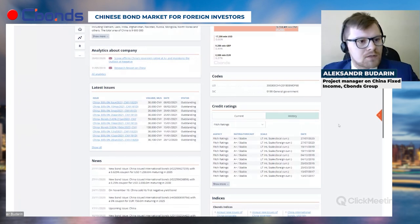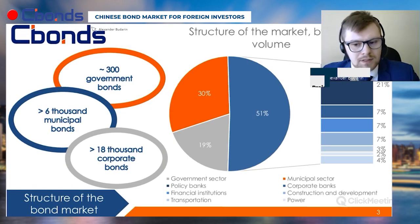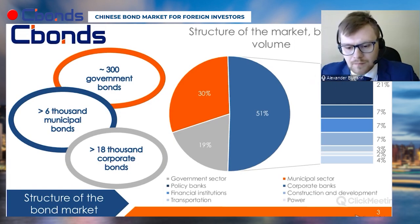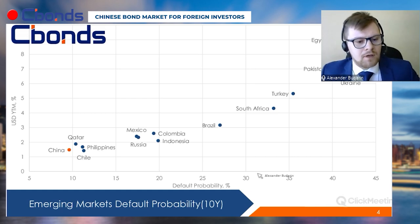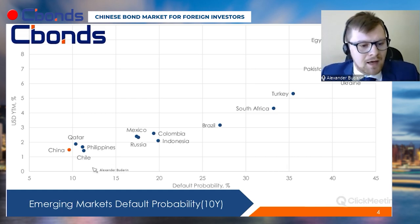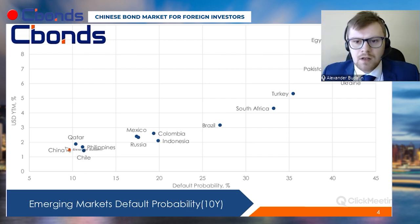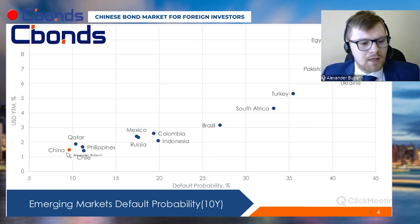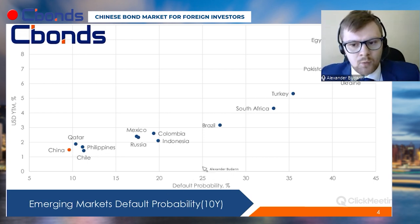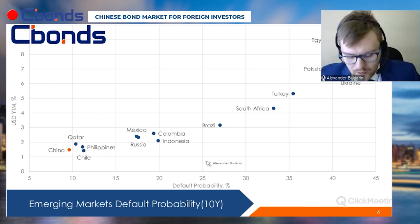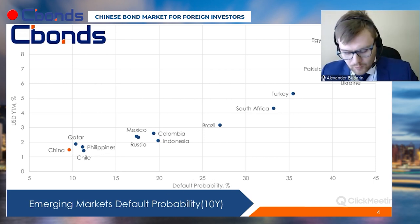As for the default probability, among selected emerging markets, China has the lowest default probability. It is less than 10 percent over a 10-year time horizon, which is quite good.